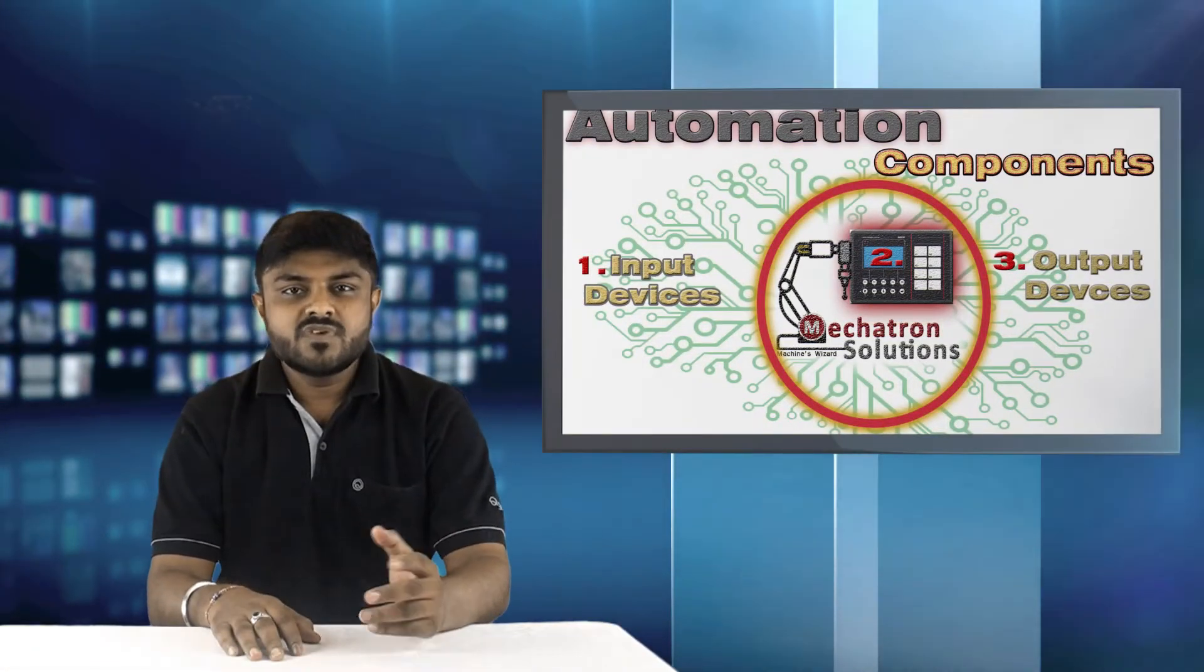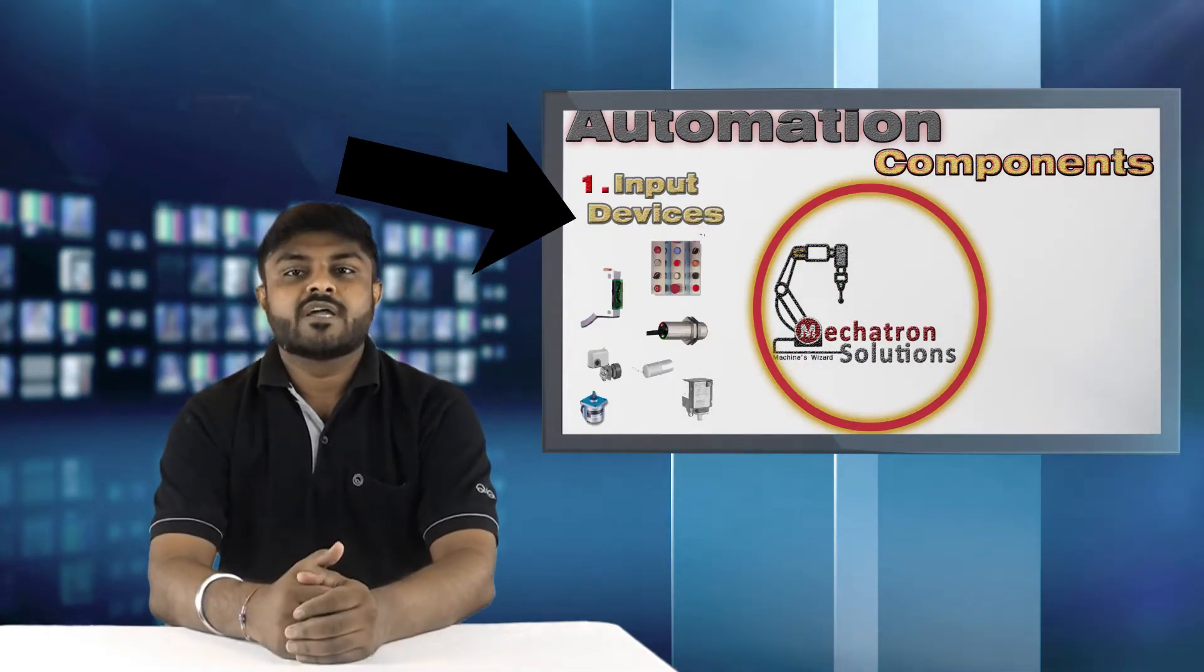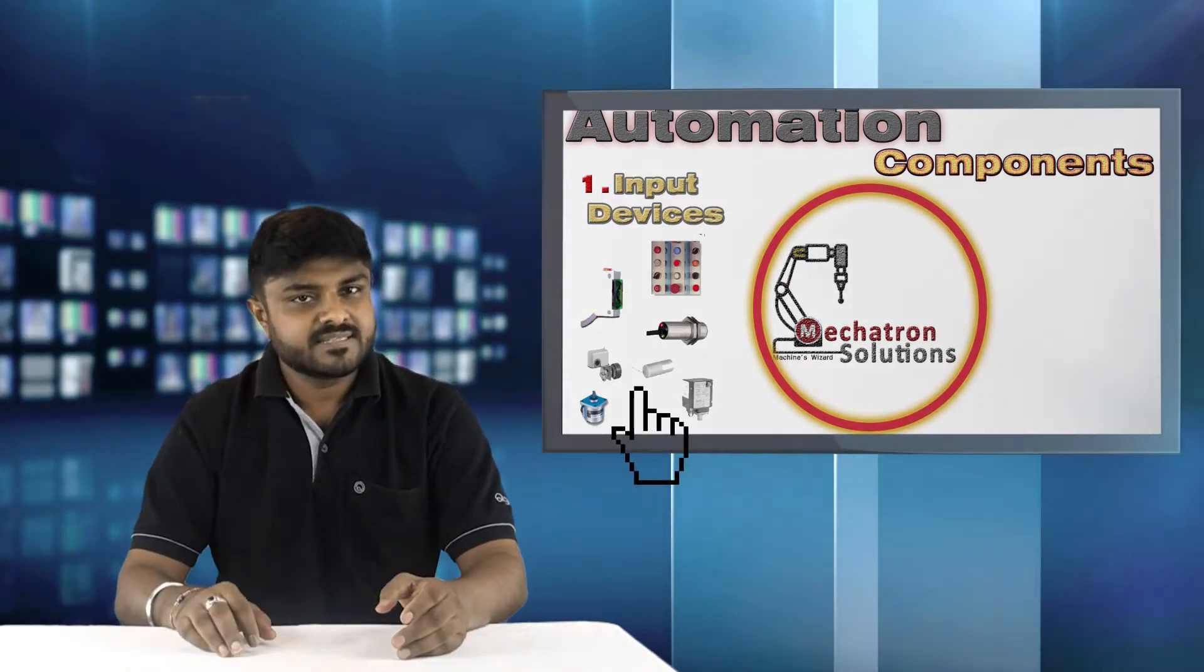Without wasting time, we will start with basic block diagram of Automation System. In this block diagram, first block takes input from the field devices by variety of sensors.